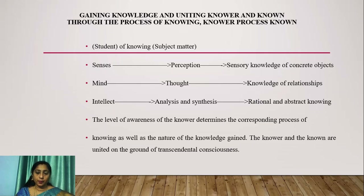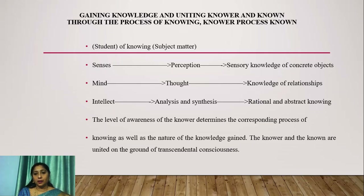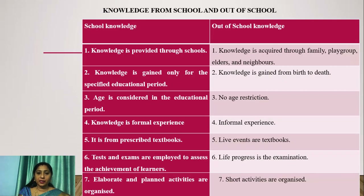The student of knowing and the subject matter are connected through the senses, perception and sensory knowledge of concrete objects; mind, thought and knowledge of relationships; and intellect, analysis and synthesis for relational and abstract knowing. The level of awareness of the knower determines the corresponding process of knowing as well as the nature of knowledge gained. The knower and the known are united on the ground of transcendental consciousness.